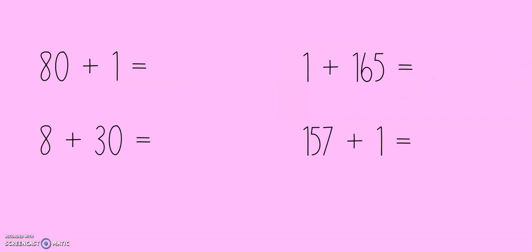Today, one of our goals is to work on quick adding strategies. Now, let's take a look at this first problem right here. We have 80 plus 1. Now, second grade, which number is bigger? 80 or 1? 80 is bigger. Now, 1 is from the ones place. It is only one digit. So what I can do is I can take that 1 and add it into the ones place. 80 plus 1 is equal to 81.